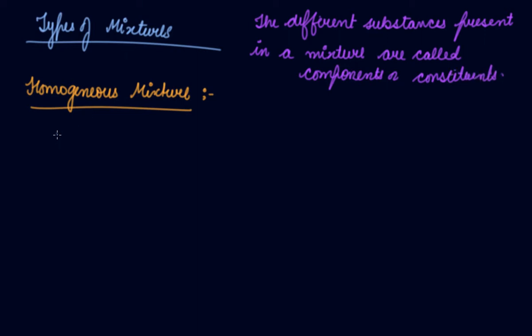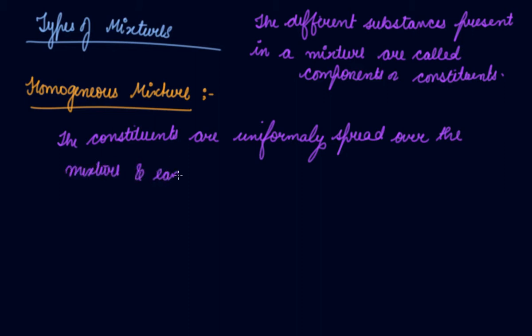Now, homogeneous mixture is the mixture in which the constituents or the components are uniformly spread over the mixture, and each part of the mixture has the same properties. Then the mixture is known as a homogeneous mixture.